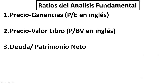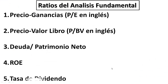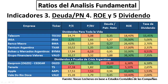Otro indicador relevante es la deuda sobre el patrimonio neto de la empresa, que muestra cómo está financiada la empresa: con capital propio o con deuda ajena. Un número mayor a 1 indica que tiene más deuda que capital, una situación financiera más frágil. También está el ROE (Return on Equity), que mide el rendimiento del capital propio y se calcula dividiendo el beneficio neto sobre los fondos propios. Por último, la tasa de dividendo surge de dividir los dividendos totales pagados por el precio de la acción; por ejemplo, si una acción paga 0.20 dólares y su precio es 10, tiene una tasa de dividendo del 2%.